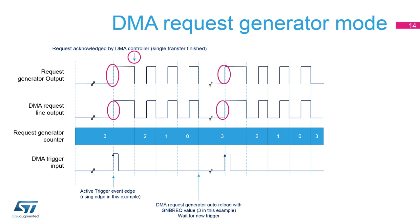The DMA request generator can be used to generate a series of DMA requests from a single DMA trigger input edge detection. Upon the trigger event, the corresponding generator channel starts generating DMA requests on its output. Each served DMA request, signaled by a request signal deasserted, decrements a built-in DMA request counter internally to the DMA-MUX request generator. At its underrun, the DMA request counter is automatically loaded with the value in the GNB-REQ field of the corresponding DMA-MUX RG-XCR register, and the request generator channel stops generating DMA requests. Thus, the number of DMA requests generated after the trigger event is the value in the GNB-REQ field plus 1.